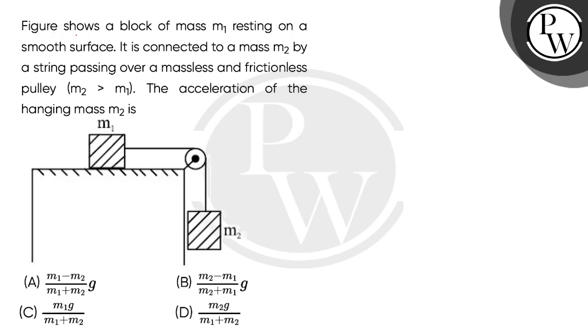So let's read the question. Figure shows a block of mass M1 resting on a smooth surface. It is connected to a mass M2 by a string passing over a massless and frictionless pulley. M2 is more than M1. The acceleration of the hanging mass M2 is.